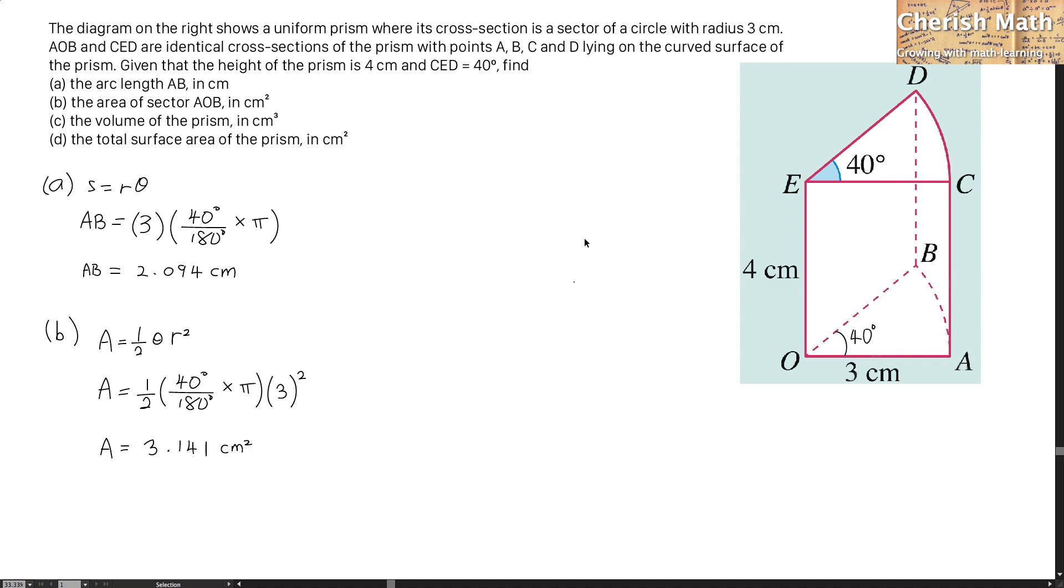To find the volume for part C, I'm going to use the base area from part B, which is 3.141, and multiply it by the height of 4 cm, which is OE. The answer is 12.564 cm³.